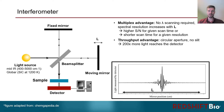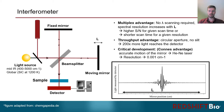The second is the so-called throughput advantage, which essentially means that the loss of light in the instrument is reduced by a factor of 200. The third is the so-called Connes advantage, which was a critical development in FTIR. Sending a helium-neon laser beam alongside the main beam allows determining the motion of the moving arm more accurately, giving rise to a spectral resolution of up to one-thousandth of a wave number.